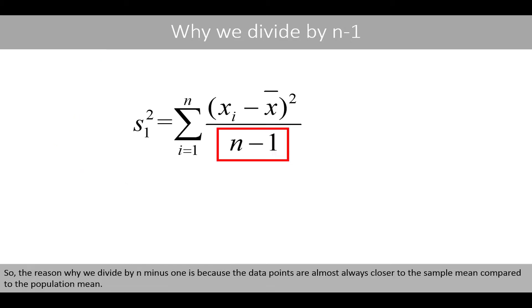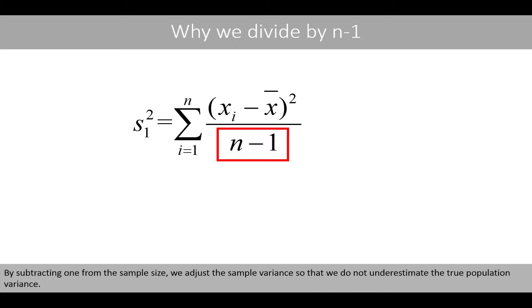So, the reason why we divide by n minus 1 is because the data points are almost always closer to the sample mean compared to the population mean. By subtracting 1 from the sample size, we adjust the sample variance so that we do not underestimate the true population variance.